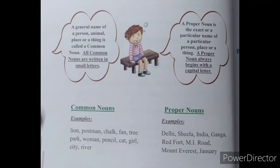It is very clear that a general name of a person, animal, place or thing is called a common noun, and all common nouns are written in small letters.